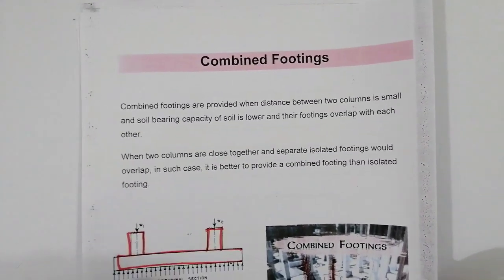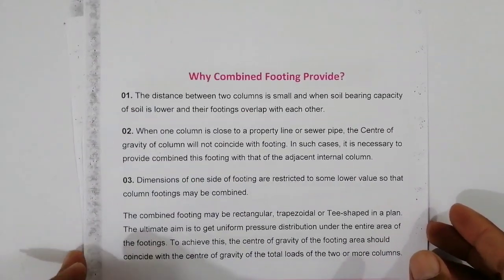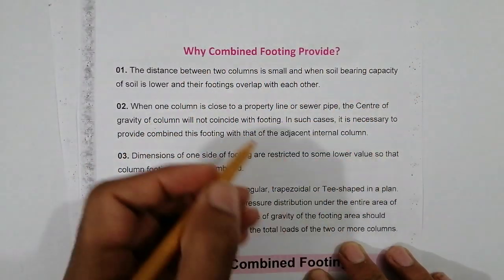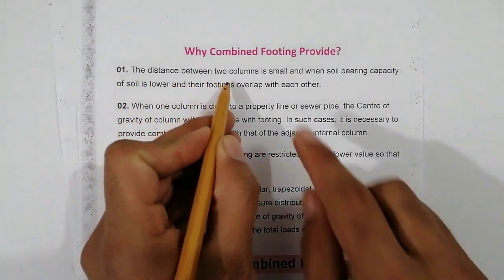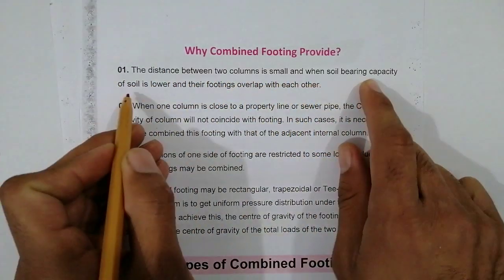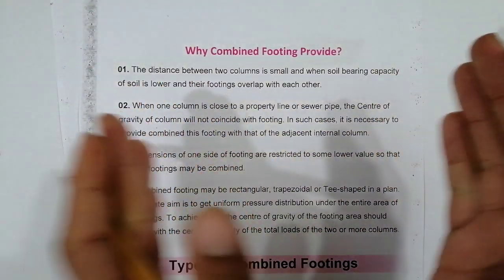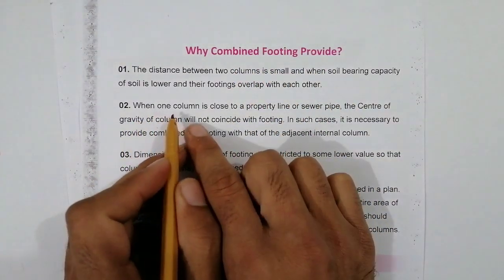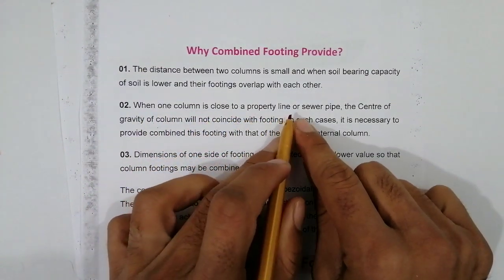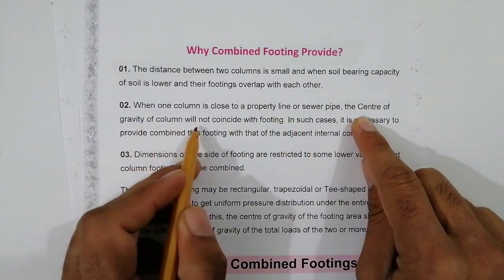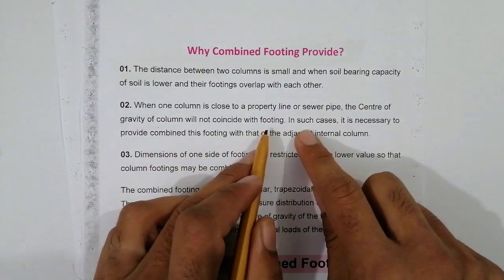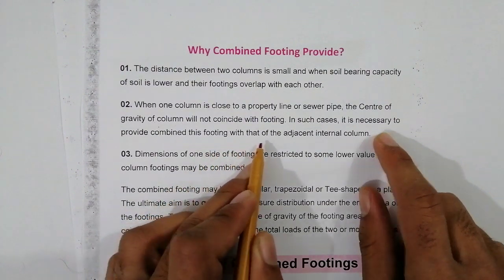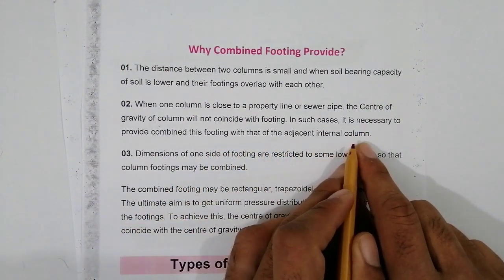Why do we provide combined footings in building construction? The first reason: the distance between two columns is small, the soil bearing capacity is lower, and their footings overlap with each other. The second reason: when one column is close to a property line or sewer pipe, the center of gravity of the column will not coincide with the footing.